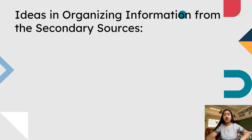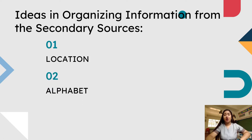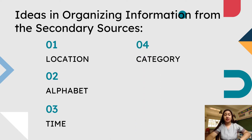Here are some ideas for organizing information from secondary sources. First, you can organize information by their location. You can also consider alphabet, time, category, and lastly, hierarchy.